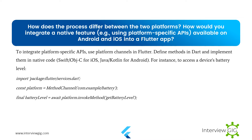How would you integrate a native feature using platform-specific APIs available on Android and iOS into a Flutter app? To integrate platform-specific APIs, use platform channels in Flutter. Define methods in Dart and implement them in native code — Swift/ObjC for iOS, Java/Kotlin for Android. For instance, to access a device's battery level.